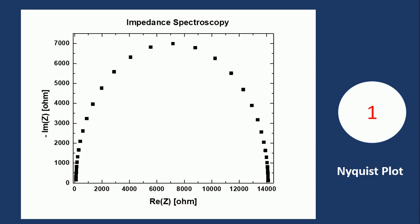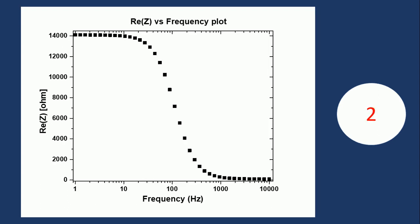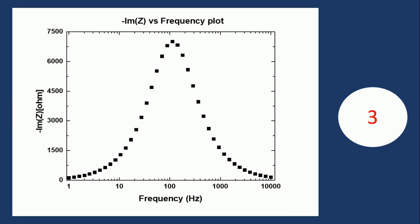If you want to understand and visualize the data more clearly, you can also plot it in another way. For example, you can plot the real part along the y-axis and frequency along the x-axis — here the frequency scale is in log scale. Observing this, you can see a slope change corresponding to 100 Hz, where the real part of impedance is around 7,000, which is the same value as in the previous Nyquist plot.